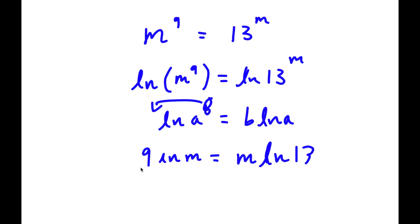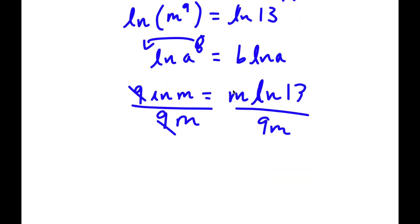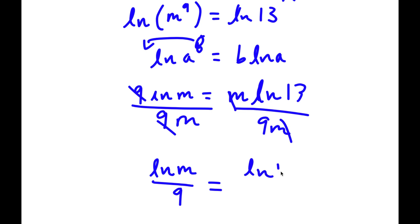Now if I divide both sides by 9m, these terms cancel out, so I have ln m over m is equal to ln 13 over 9.